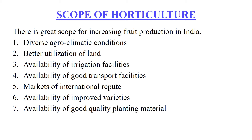For guava, high-yielding varieties include Sardar (L-49), Lalit, and Allahabad Safed. For cashew nut, varieties Vangurla numbers 1 through 8 are available for growers. Similarly, introduction of commercial cultivation of new crops like ber, aonla, pomegranate, and fig has good scope for bringing more area under cultivation.